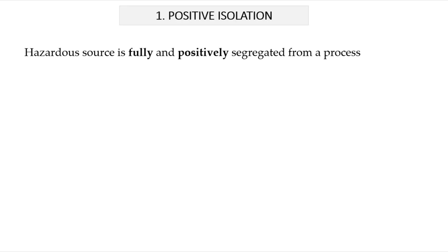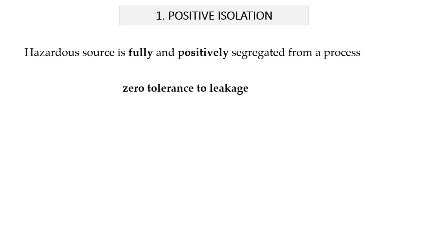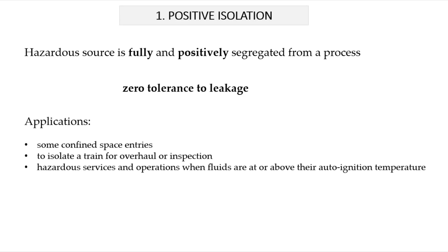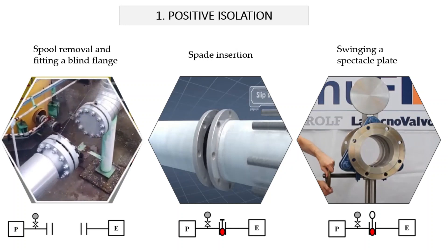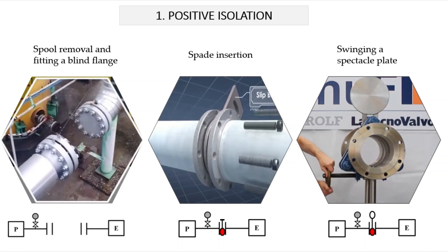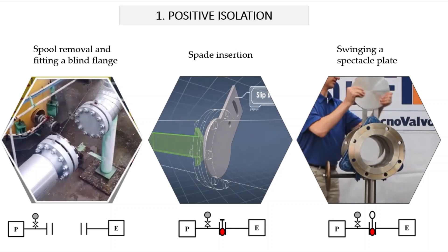With the order of criticality, it starts with positive isolation — the method where the hazardous source is fully and positively segregated from a process. This method is applied if there is zero tolerance for leakage to the system, such as some confined space entries, to isolate a train for overhaul or inspection, for hazardous services and operations when fluids are at or above their auto-ignition temperature. It can be achieved by either pipework removal and blind flange installation, or insertion of a spade or swinging of a spectacle plate.